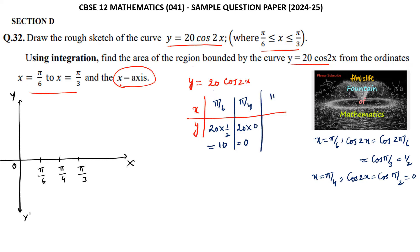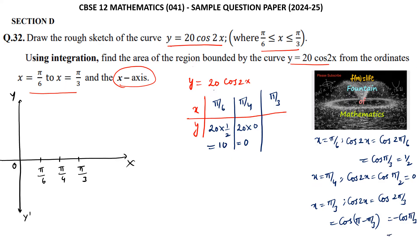When x = π/3, cos2x = cos(2π/3) = cos(π − π/3) = −1/2, so y = 20 × (−1/2) = −10. Let us mark these points.